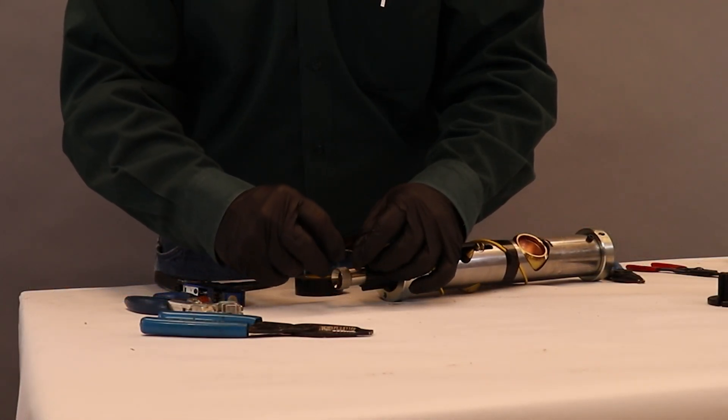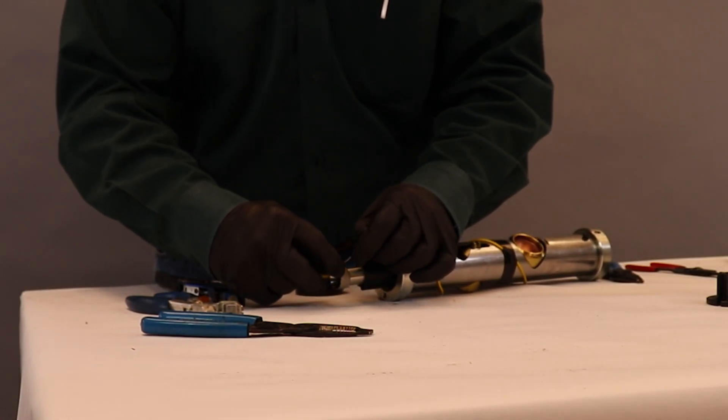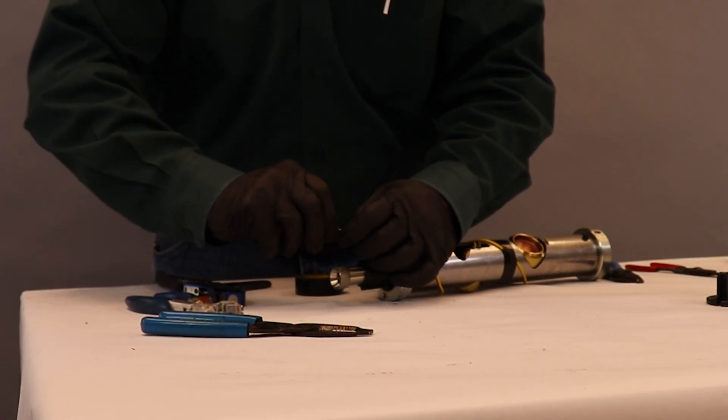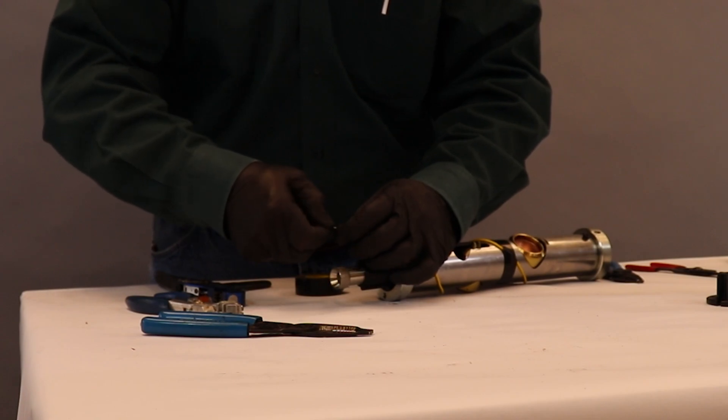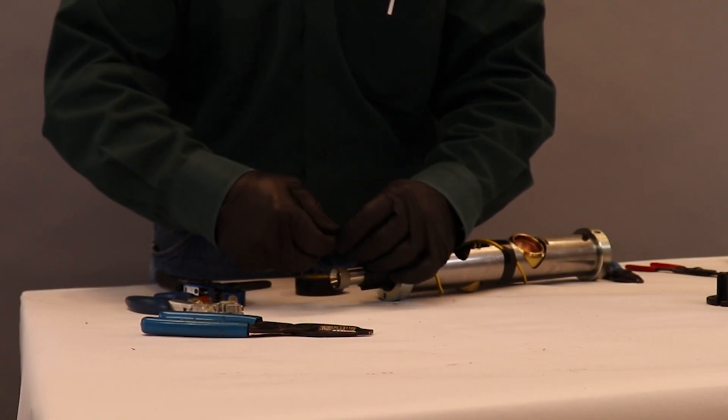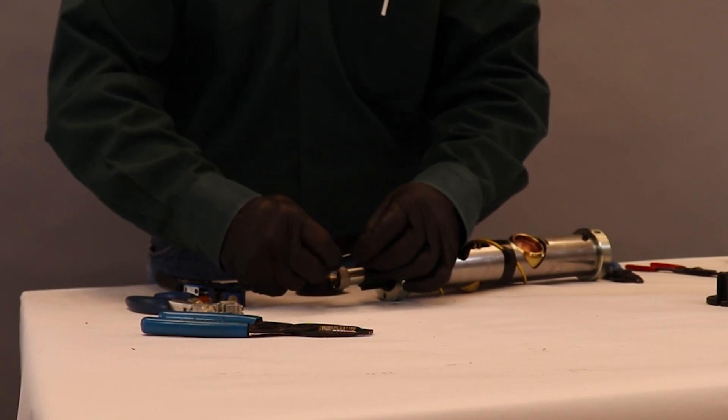So now with our wires stripped, at this point what we're going to do is make our electrical connection to the lower part of the puck assembly.